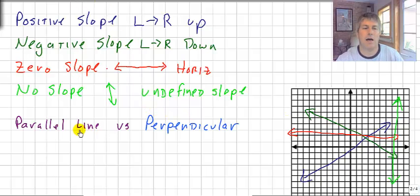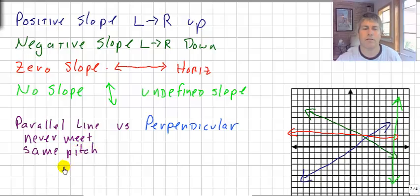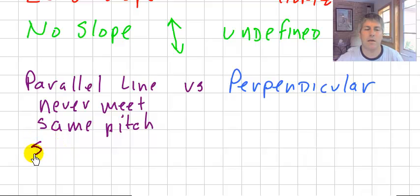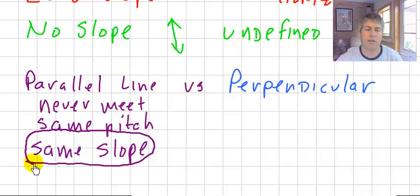So let's move on. Let's talk about parallel lines and perpendicular lines. Parallel lines, you guys know parallel lines never meet. So if they never meet, they must have the same steepness or the same pitch or the same rate of change. Well, if they have the same steepness or the same pitch and they never meet, they must have the same slope. So two lines have the same slope, then they're parallel, and if two lines are parallel, then they must have the same slope.